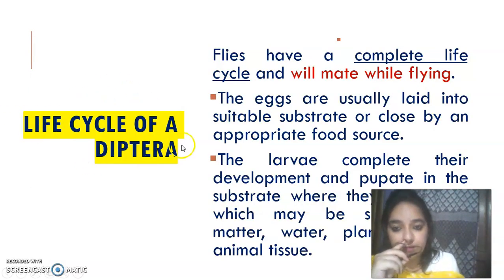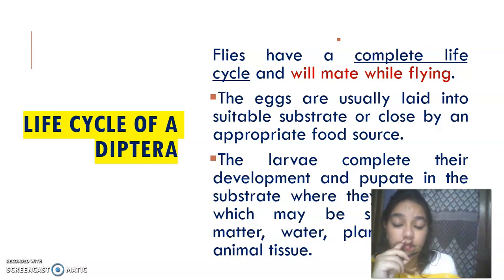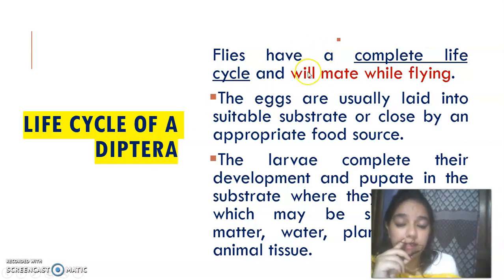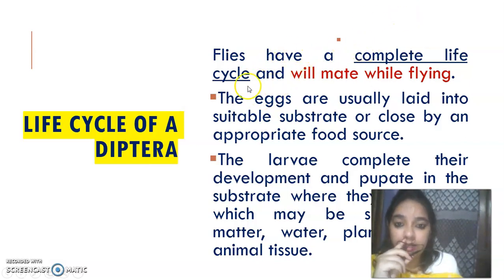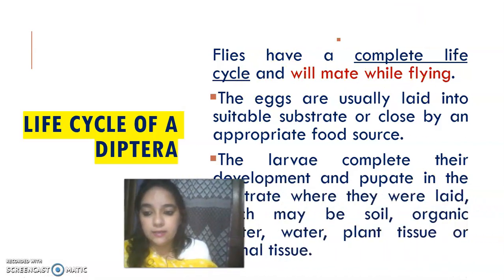Now, the life cycle of Diptera. Diptera is an endopterygote — endopterygote means the wings develop internally. Most of them have a complete life cycle, meaning egg, larva, pupa, and adult. So flies have a complete life cycle. They will mate when they are flying.